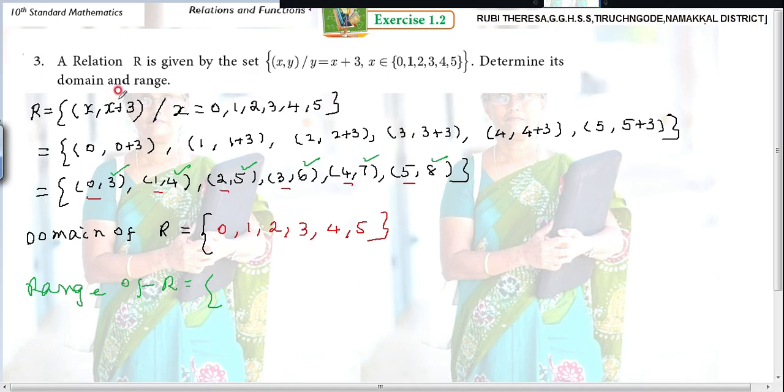When you substitute these values in place of x, these are the answers, the images you are getting. So what you have to write: 3, 4, 5, 6, 7, 8. This is the range. So first you write R, then you can write the domain and range.